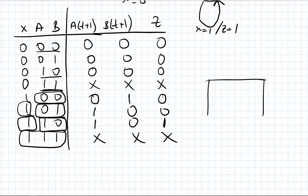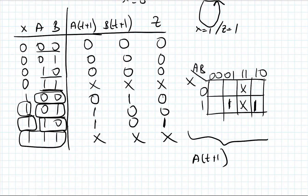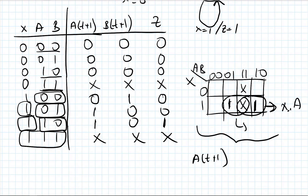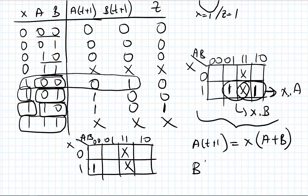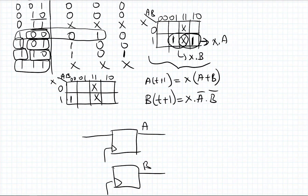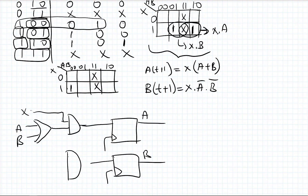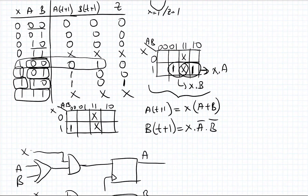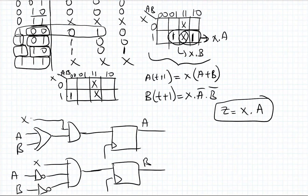I can design my circuit using the Karnaugh map. Let's simplify it. I can have two groups: one group gives X·A, another gives X·B. So A(t+1) = X·(A or B). For B(t+1) = X·A'·B'. Let's draw our circuit. I have two flip-flops — this is my A, this is my B. I have X as input, and an AND gate giving X·A'·B' for B. My output Z — since this is a Mealy machine — Z = X·A.